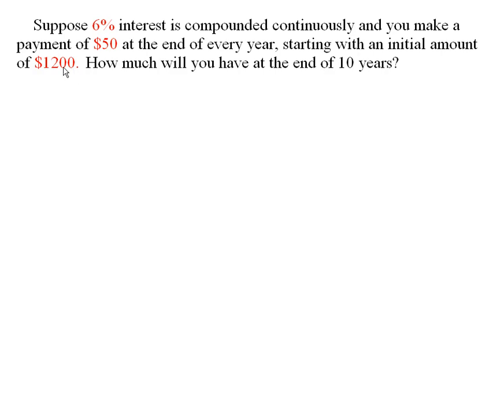So the $1,200 is put in the bank at time equal to zero. Then at the end of the first year you make a payment of $50, at the end of the second year you make a payment of $50 and so on until the end of the 10th year.